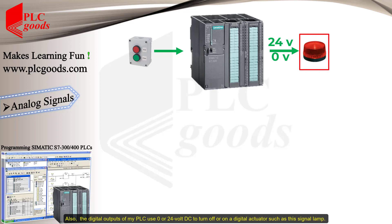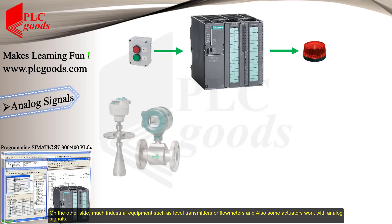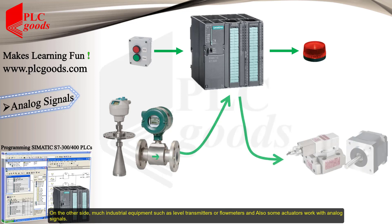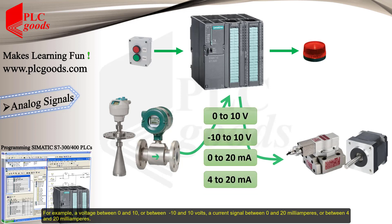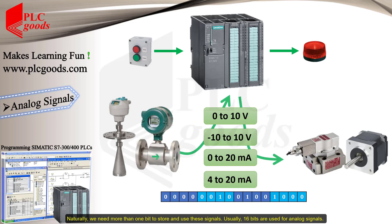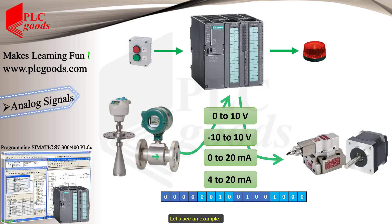On the other side, much industrial equipment such as level transmitters, flow meters, and also some actuators work with analog signals — for example, a voltage between 0 and 10, or between minus 10 and 10 volts, or a current signal between 0 and 20 milliamps, or between 4 and 20 milliamps. Naturally, we need more than one bit to store and use these signals; usually 16 bits are used for analog signals.